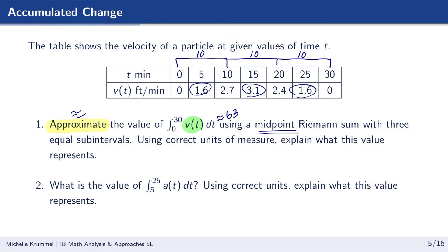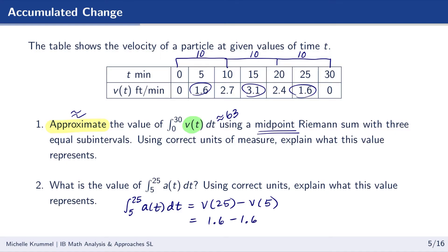The next question asks for the value of the definite integral of a of t dt from 5 to 25. Since it says evaluate — not approximate — we can find the exact value using the fundamental theorem of calculus. The antiderivative of a of t is the velocity function v of t. So this equals v of 25 minus v of 5, which from the table is 1.6 minus 1.6, giving us 0.